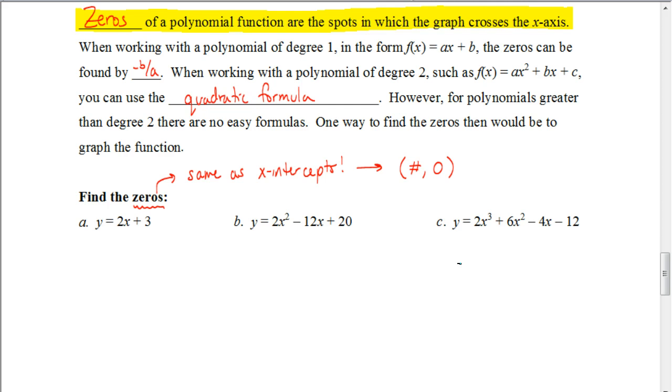A zero of a polynomial function are the spots in which a graph crosses the x-axis. In other words, the zeros are the same as the x-intercepts. Okay, that's really important to remember.